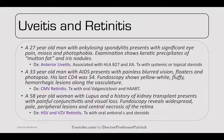Uveitis and retinitis: a 27-year-old with ankylosing spondylitis presents with eye pain, miosis, and photophobia. Examination shows keratic precipitates (mutton-fat) and iris nodules — this is anterior uveitis. It's associated with HLA-B27 and juvenile idiopathic arthritis. Treat with systemic or topical steroids. A 33-year-old man with AIDS presents with painless blurred vision, floaters, and photopsia. His last CD4 was 54; fundoscopy shows yellow-white fluffy hemorrhagic lesions along the vasculature — this is CMV retinitis. Treat with oral valganciclovir and HAART.